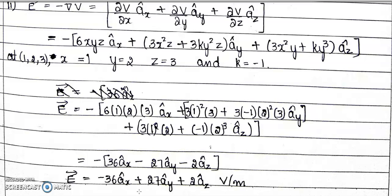The electric field intensity at (1, 2, 3) is E = −36ax + 27ay + 2az volt per meter. This is how we find electric field intensity using the Laplace equation: first confirm the equation satisfies Laplace, then use the potential gradient relation E = −∇V to find E at the given point. Thank you.